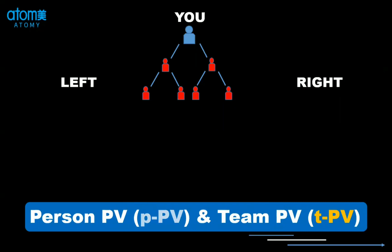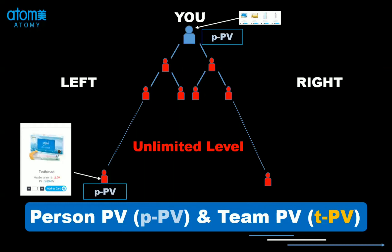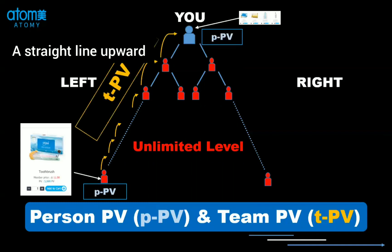For PV, the point value, there are two types. One is personal PV, PPV. And the other one is team PV. So let's say you buy the toothbrush into your own account — you get 5,000 PV as your personal PV. And Anthony is unlimited levels. It doesn't matter how many levels are under you. If the last person purchases the toothbrush, 5,000 personal PV, then from that member upward, every single one gets 5,000 team PV.